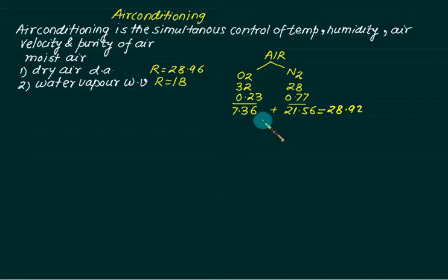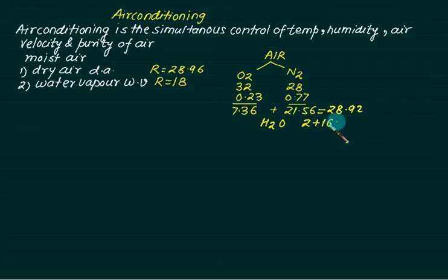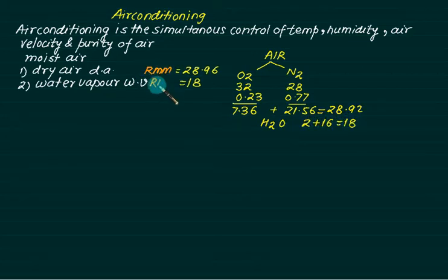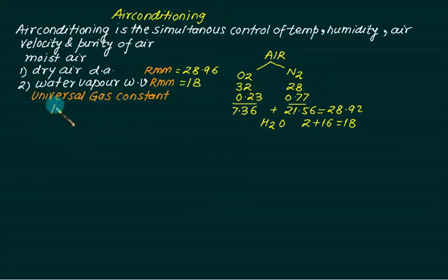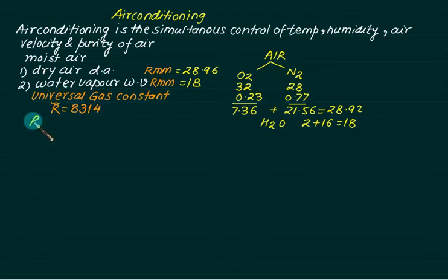Water vapor has molecular mass 18 because H₂O = 2 + 16 = 18. The relative molecular mass (MM) is used with the universal gas constant, represented by R-bar, with a fixed value of 8314 J/mol·K. The gas constant for air is R-bar divided by the relative molecular mass.